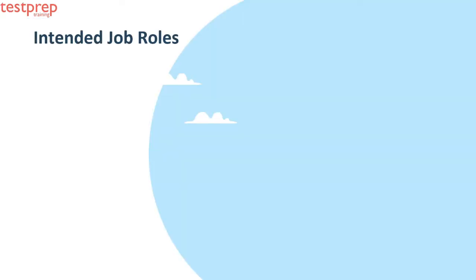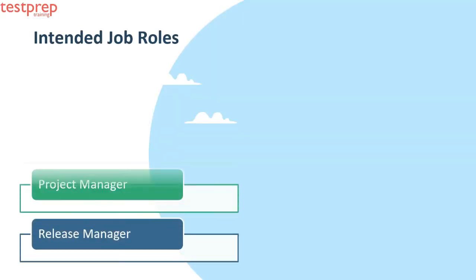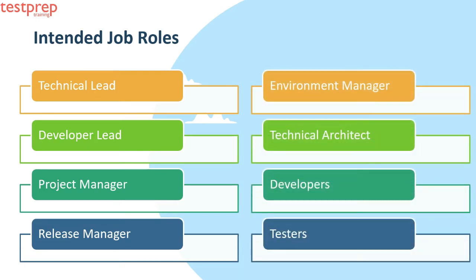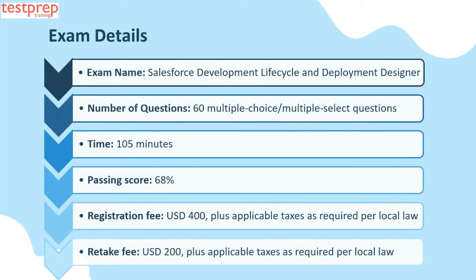Now we will talk about intended job roles. First, Technical Lead. Second, Developer Lead. Third, Project Manager. Fourth, Release Manager. Fifth, Environment Manager. Sixth, Technical Architect. Seventh, Developers. Eighth, Testers.